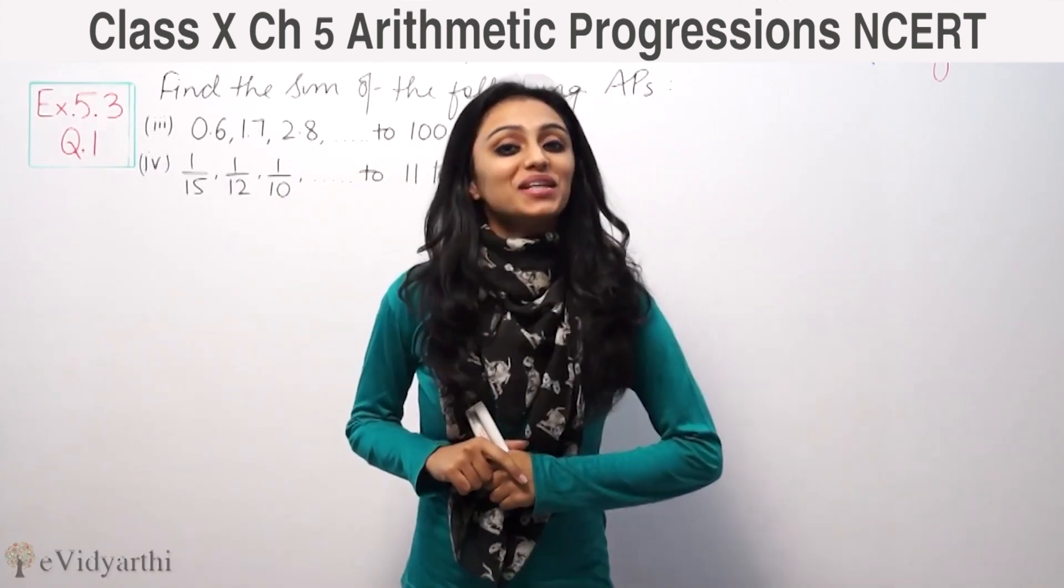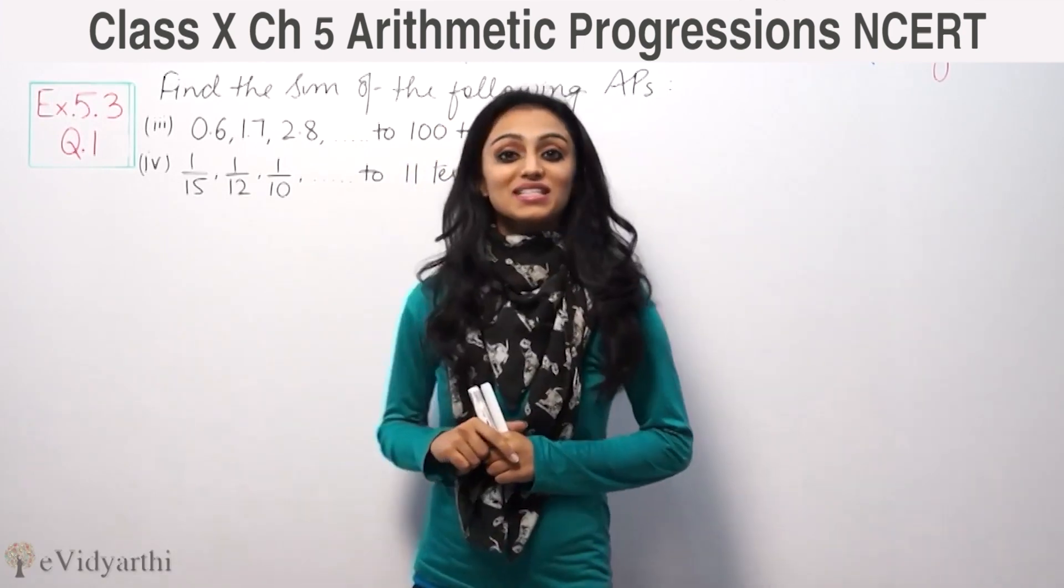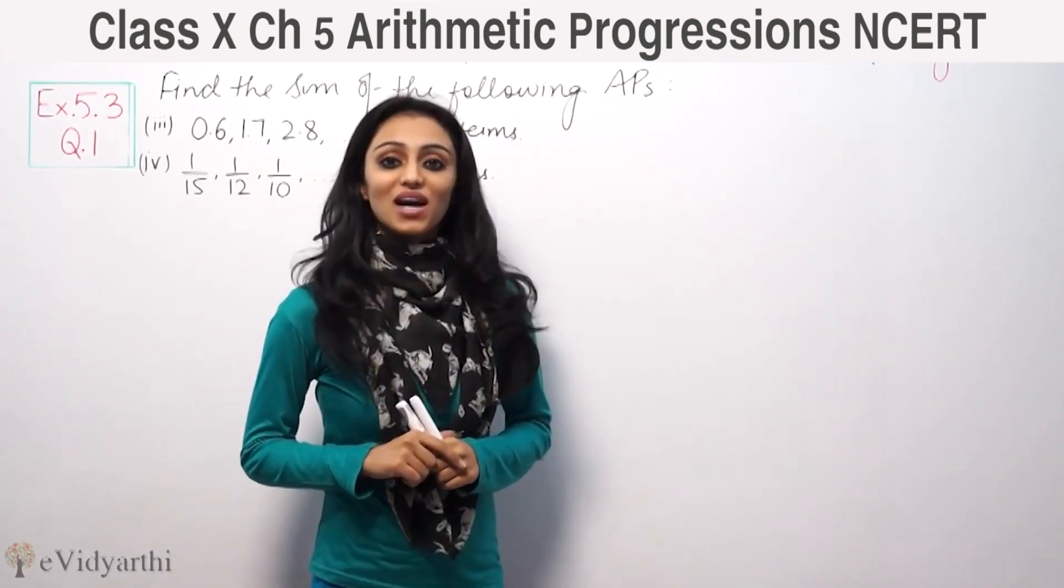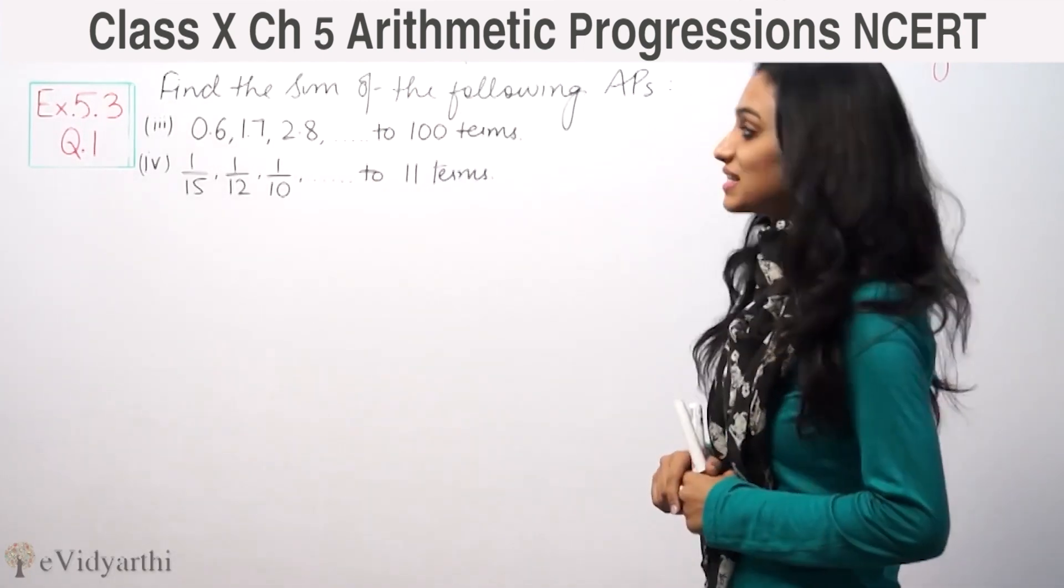Hi, this is Khushbu with another question of Arithmetic Progressions. This is the first question from exercise 5.3, page number 112 from NCERT. The question is: find the sum of the following APs.